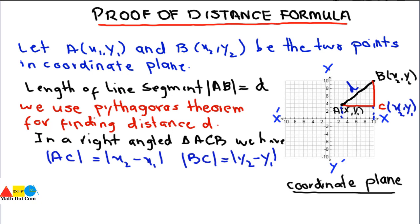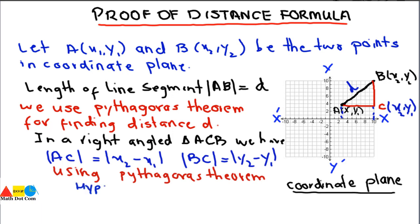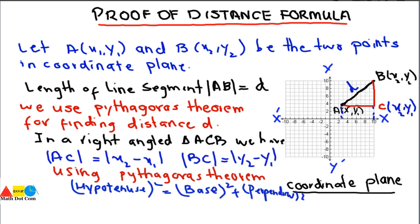Now we have the two side lengths: AC = x2 − x1 and BC = y2 − y1. The remaining side AB is the distance d we want to derive. Using the Pythagorean theorem — hypotenuse squared equals base squared plus perpendicular squared — we get: d² = (x2 − x1)² + (y2 − y1)².